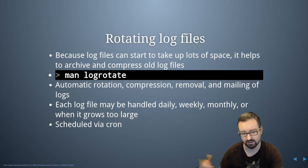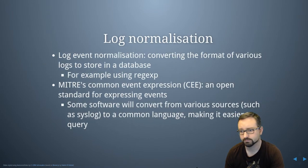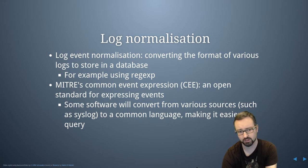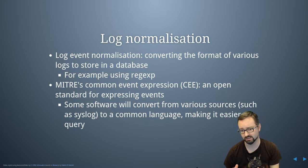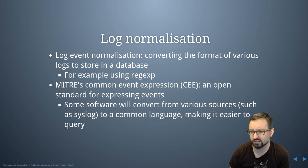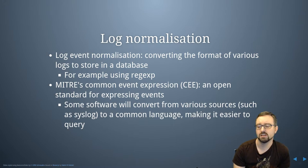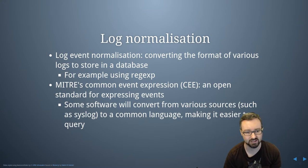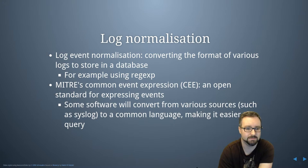You can schedule logrotate via cron, which is the Unix way of having things happen on a schedule. Log normalization allows you to convert the format of various kinds of logs so that you can store them in a central database. You'll typically use regular expressions to pull out the fields you're interested in from a log entry and then create a normalized way of storing that information. MITRE's Common Event Expression (CEE) is an open standard for expressing events which some software will convert from various sources to a common language to make it easier to query.